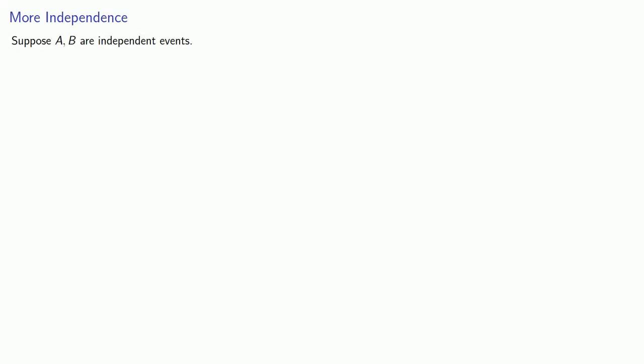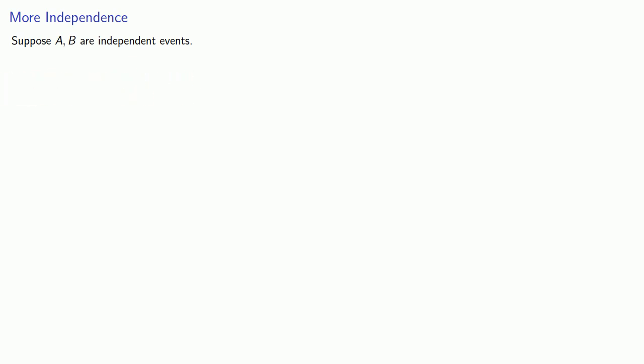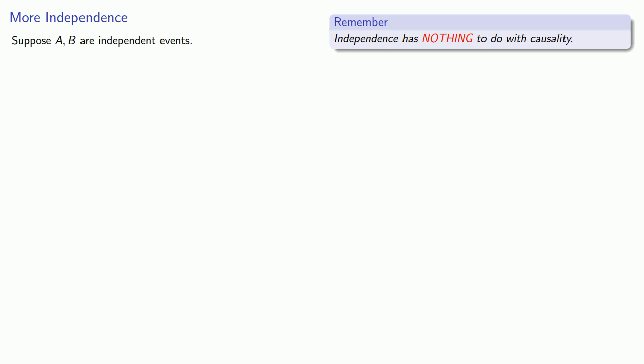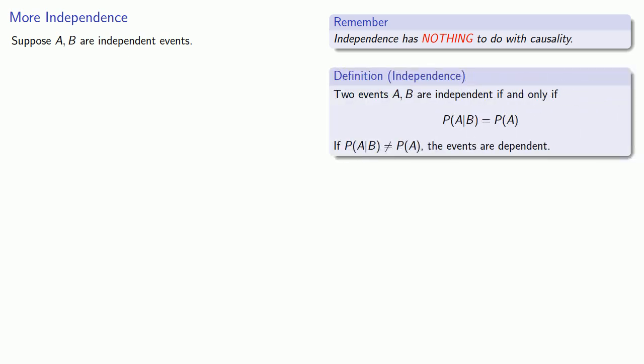The value of these computing formulas is that they allow us to talk about more probabilities. Let's consider independence again. If you only learn one thing about probability, you're going to fail the class. Among the very important things you should learn is that independence has nothing to do with causality. Remember, definitions are the whole of mathematics — all else is commentary. Two events are independent if and only if the probability of A given B is equal to the probability of A itself.